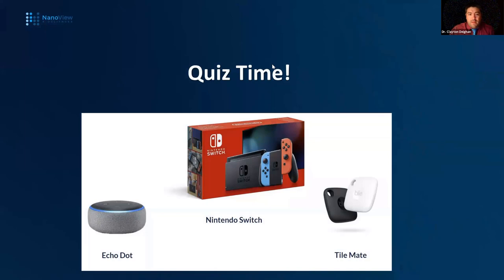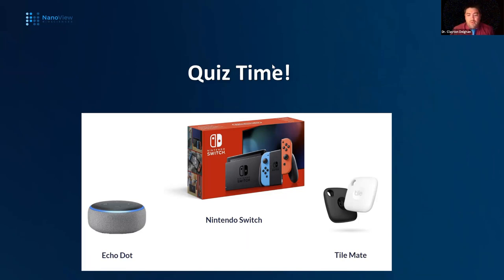We've got a couple of prizes. In each session, we're going to give away one Echo Dot and one Tile Mate to a participant who answers all four poll questions. The two that pertain to the new R200 system are pretty easy, and then two are just about you. The first one: where are you from? A single Nintendo Switch will also be given away after the conclusion of the second webinar in the Americas time later today.